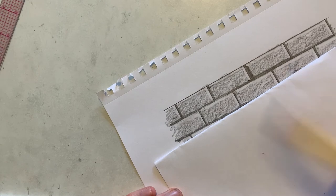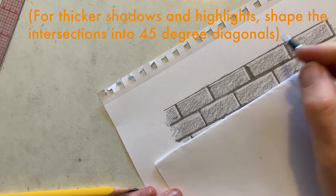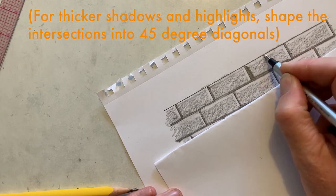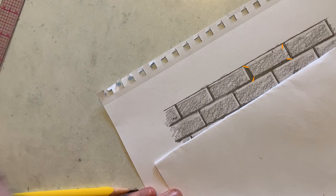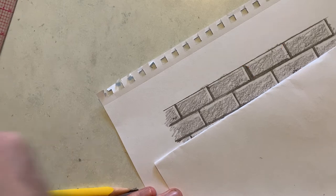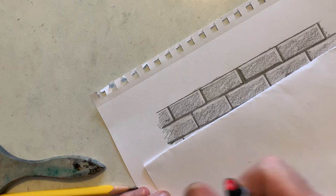Now if you end up making really thick shadows and highlights like I'm doing right here, then that's okay. But you might want to think about the shape right there in the corner and use like a 45 degree angle like I'm doing there in the corner. Otherwise, if your highlights and shadows are pretty thin like mine, you can just kind of fudge the corners like I did.